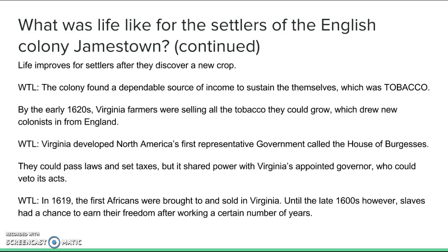In addition, in 1619 we see the first Africans brought over to be sold as slaves in Virginia. Originally, slavery did not look like we traditionally think of it in North America. Yes, they were brought over, treated as slaves, and forced to do labor. However, at first there was the possibility of being freed — slaves could work a certain number of years and earn their freedom. Some did, though not all. Permanent slavery — where you are a slave for life, and your children, and their children — became more the norm in Virginia in the last part of the 1600s.